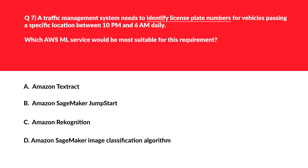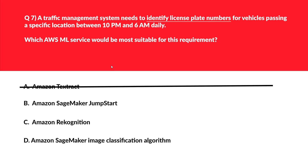This question is about a real-life scenario of identifying license number plates — the kind of automation traffic offices do. Option A is Amazon Textract — Textract is focused on extracting text from documents and not on analyzing live traffic images as required, so we'll reject this. Option B is Amazon SageMaker JumpStart — JumpStart is a hub for various models but not specialized for real-time image analysis of traffic. Imagine a two-wheeler passing a red light — we need real-time image analysis, so SageMaker JumpStart is not the right product here.